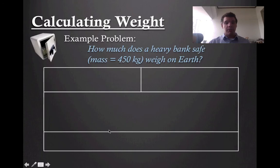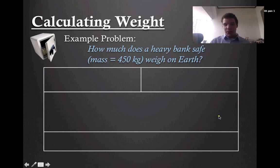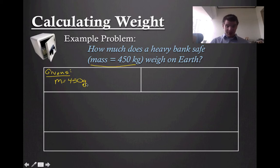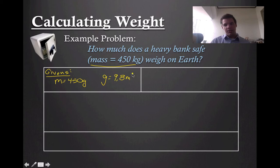So let's go ahead and apply that to a problem. Example problem — really easy one. How much does a heavy bank safe that has a mass of 450 kilograms weigh on Earth? Remember, we're going to use our box organizer for every single physics problem we ever do. In this box, we write down our givens. The first given is that the mass is 450 kilograms. The second one we need to remember is that the little g value is equal to 9.8 meters per second squared — this isn't always going to be explicitly given to you, so you've got to be careful to write it.